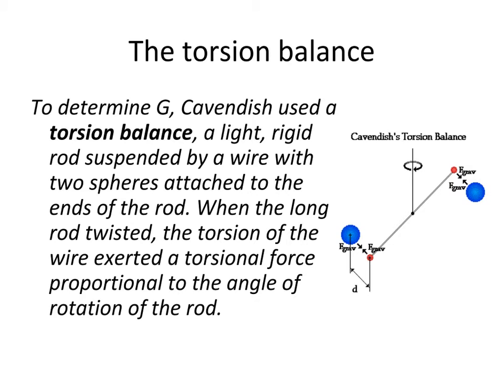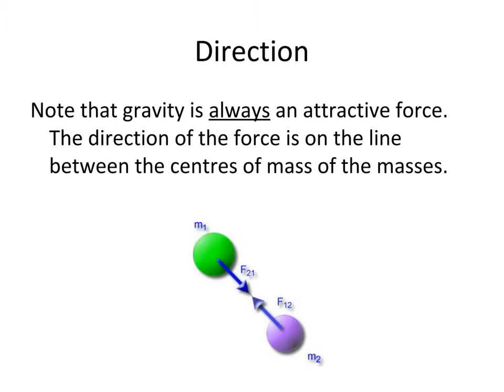And this is how Cavendish did it. He used what's called a torsion balance. A light rod that was suspended by a wire with two relatively light spheres attached to the ends of the rod. But they were attracted to the larger spheres. We can see those in blue right down here. And when the long rod was twisted, the torsion or twisting of the wire exerted a force that was proportional to the angle of rotation of the rod. Measuring that force Cavendish was able to determine big G. And it's a value that we use today. A very accurate value.